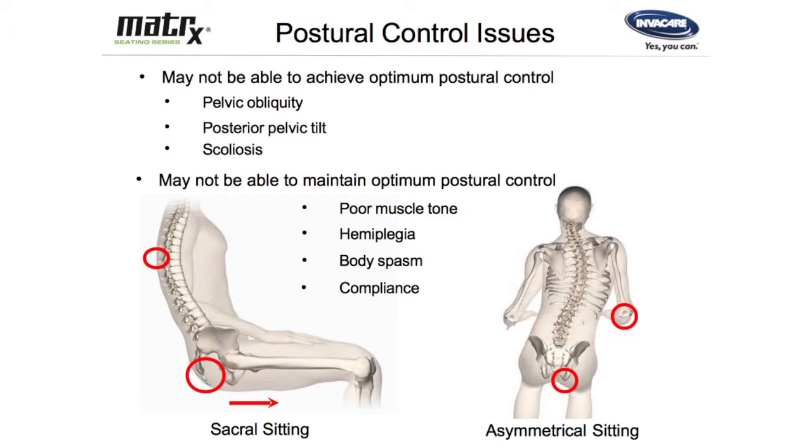We know and we experience and see day to day that we work with people with postural control issues — it's not straightforward. Those of you that are OTs in the room can tell us a lot of stories about complex needs. With postural control issues, we might not be able to achieve optimum postural control. My mother always said you can only do the best with what you've got. I do believe you've got the answer with this cushion — I do believe that the Libra is going to sort out a lot of these issues — but we may not be able to achieve optimum postural control with everybody.